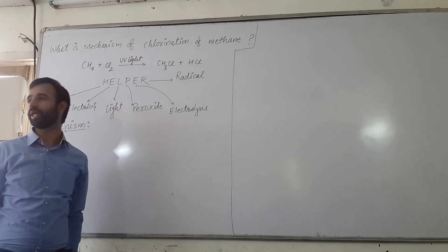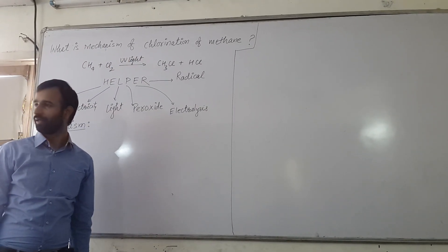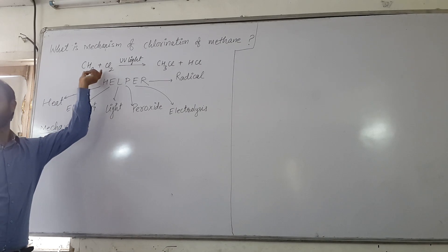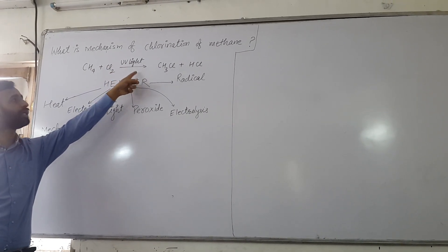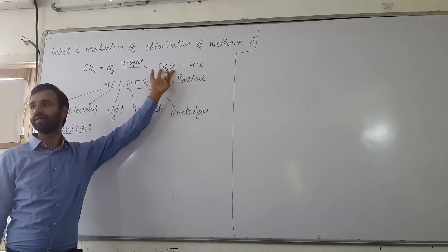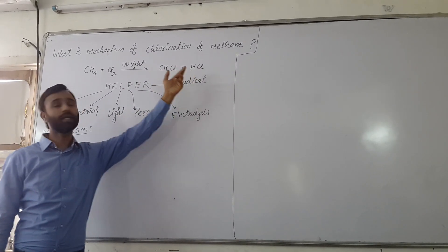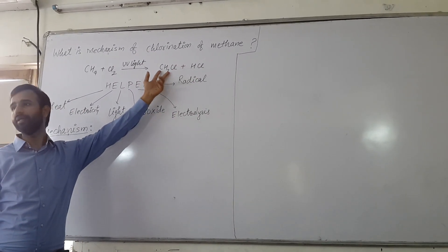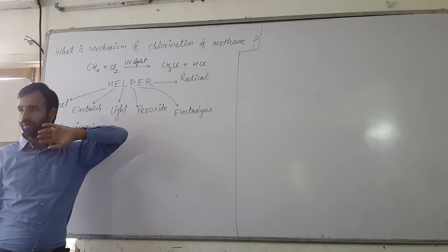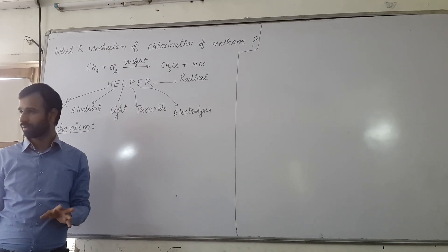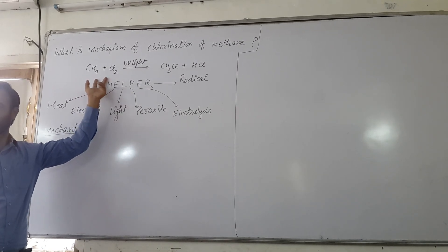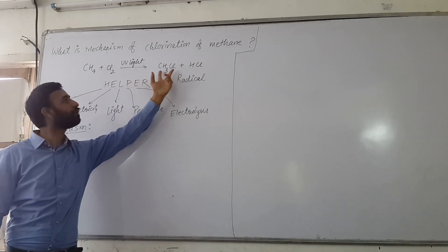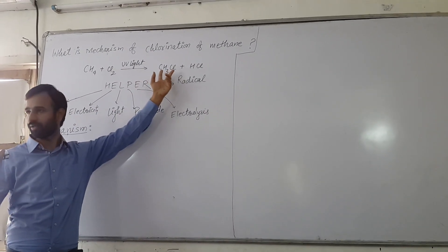What is the mechanism of chlorination of methane? When methane reacts with chlorine in the presence of UV light, we get methyl chloride and HCl. But methyl chloride is not the only product — there is a mixture of products. However, if methane is in excess, then we get methyl chloride as the major product.